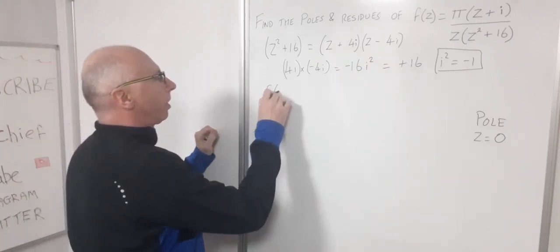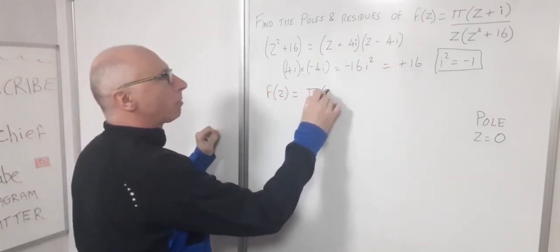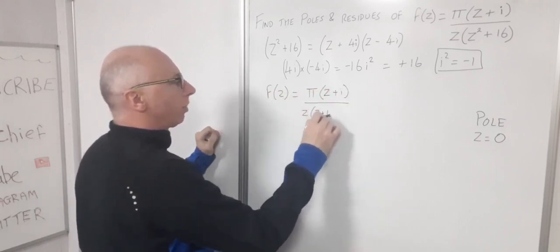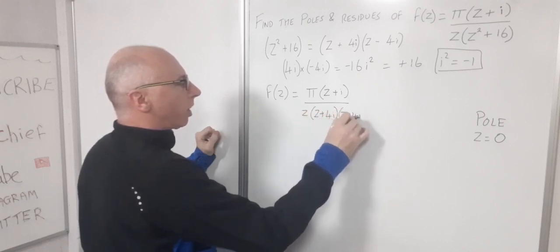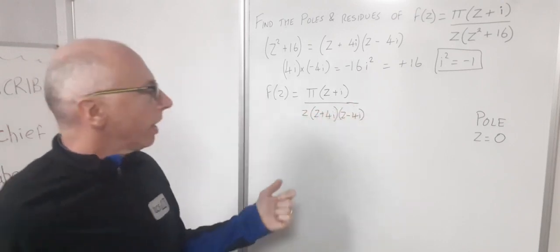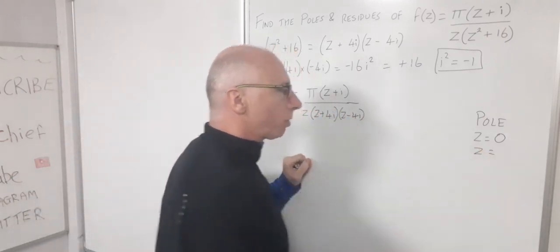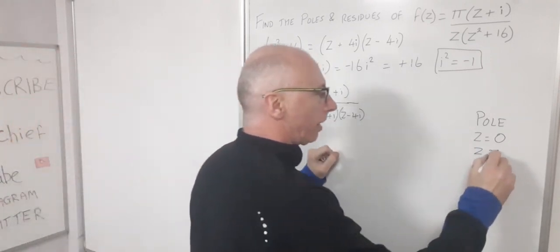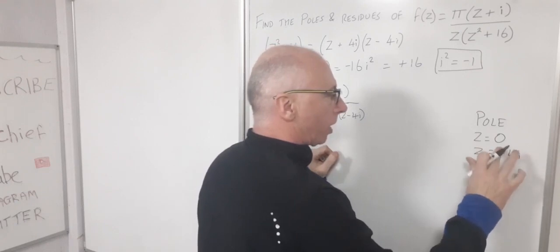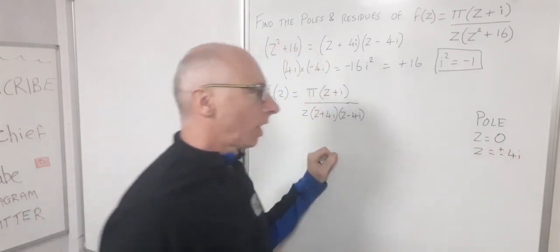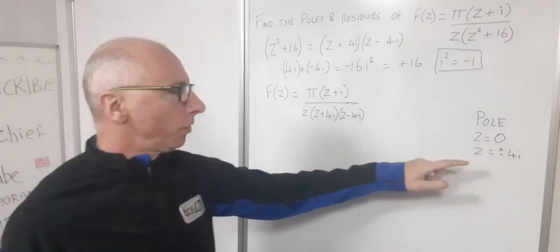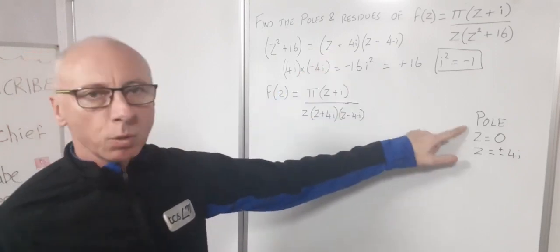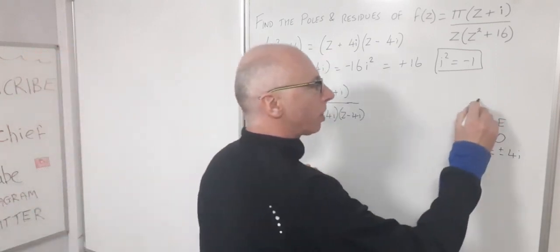So our function is f(z) = π(z+i) / [z(z+4i)(z-4i)]. Our three poles are at z=0, z=-4i, and z=+4i. Since each factor appears with a power of 1, these are all simple poles.